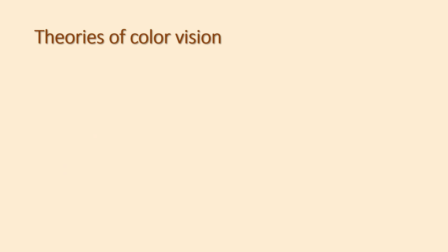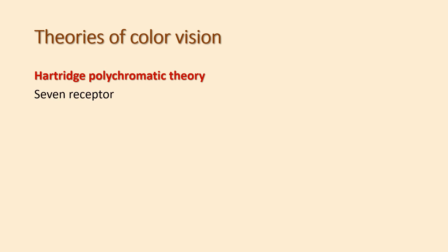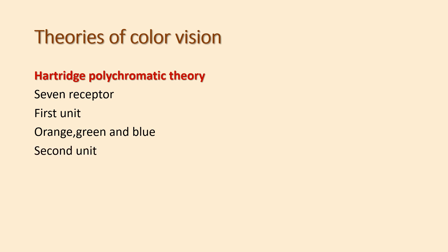The Hartridge polychromatic theory. According to the Hartridge polychromatic theory, the human retina has 7 types of receptors, divided into 3 units. The first is a tricolor unit consisting of receptors for orange, green, and blue. The second is a dicolor unit with receptors for yellow and blue. The third is another dicolor unit with red and blue.